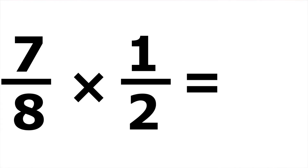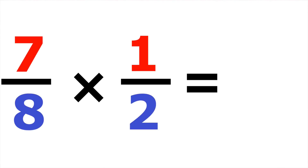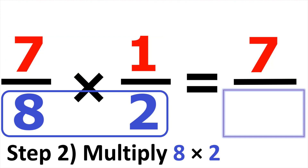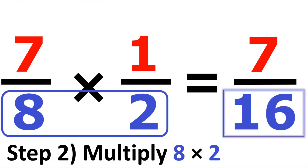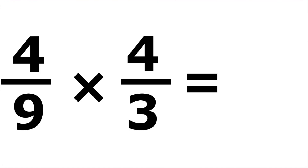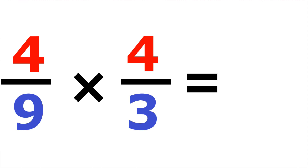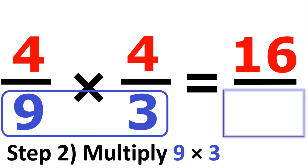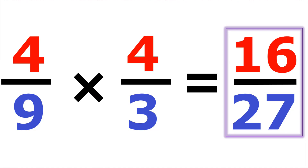Number fourteen, we have seven over eight times one over two. Up top, seven times one gives us seven. At the bottom, eight times two gives us sixteen. The answer is seven over sixteen. Looking at number fifteen, we have four over nine times four over three. Multiply straight across: four times four gives us sixteen. At the bottom, nine times three gives us twenty-seven. So the answer is sixteen over twenty-seven.